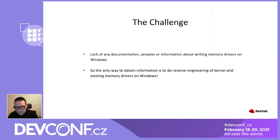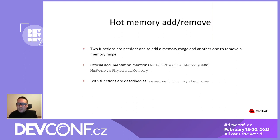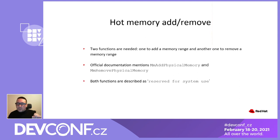The only way to obtain this secret information is to do reverse engineering of the kernel and existing memory drivers on Windows, because such drivers for memory do exist. What we really need in order to implement such a driver are functions — some way to add or remove memory to the operating system, to Windows, in a very dynamic way. Two functions are needed: one to add a memory range to the OS, and another to remove a memory range.